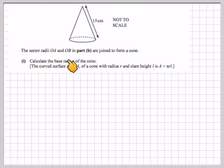The radii OA and OB in part B are joined to make a cone. Calculate the base radius of the cone. The curved surface area of a cone with radius R and slant height L is A equals pi r L.